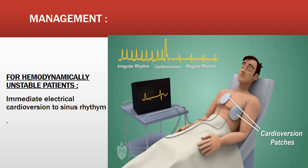For hemodynamically unstable patients, we must immediately perform electrical cardioversion to sinus rhythm. This applies to all tachycardias except pulseless VT, which is a shockable rhythm requiring defibrillation — there is a difference between cardioversion and defibrillation. Hemodynamically unstable means the patient has hypotension, signs of shock, signs of ischemic heart disease, or acute altered level of consciousness.